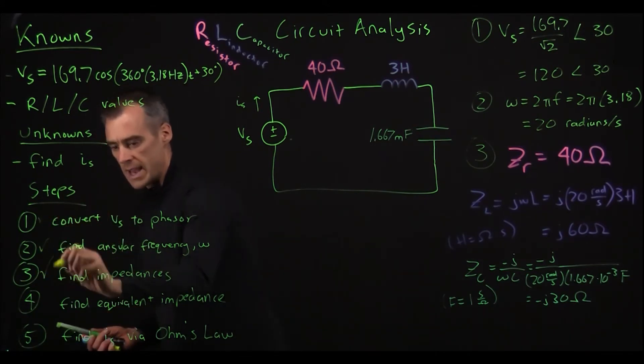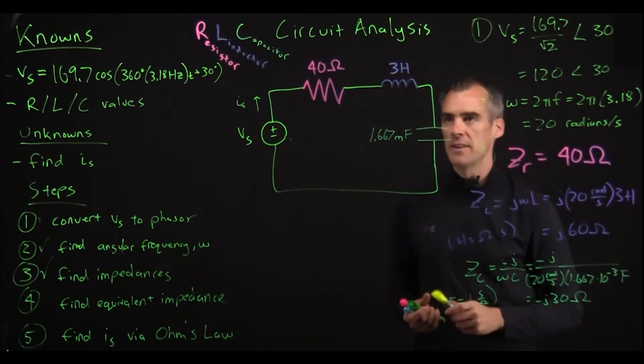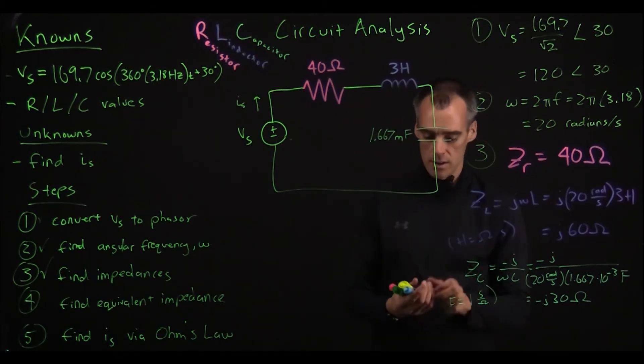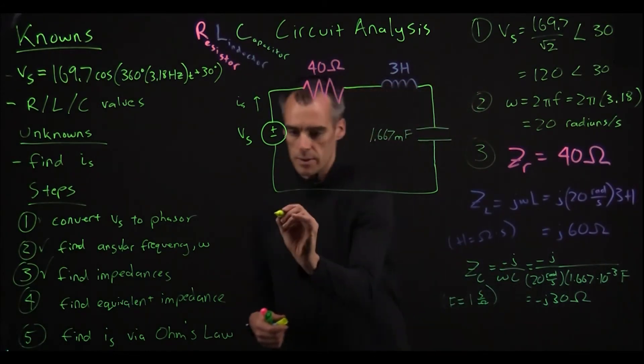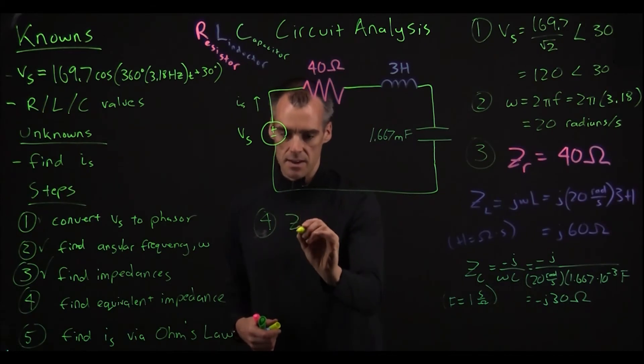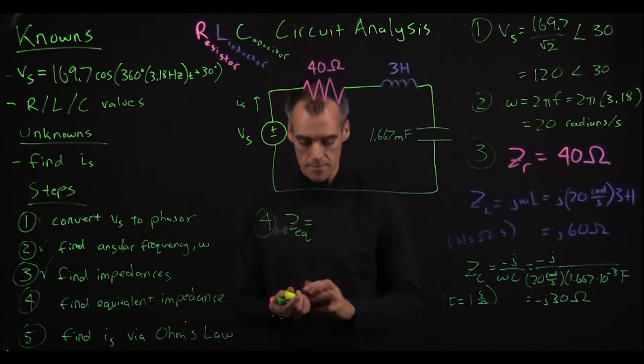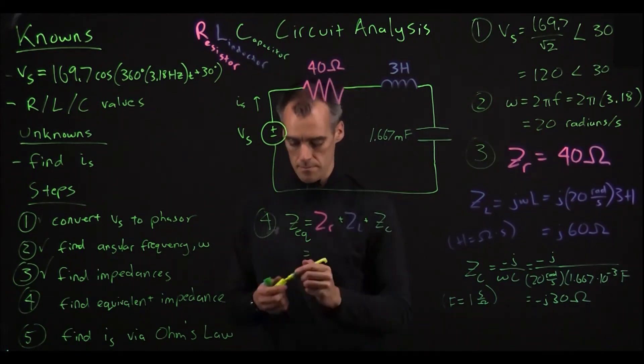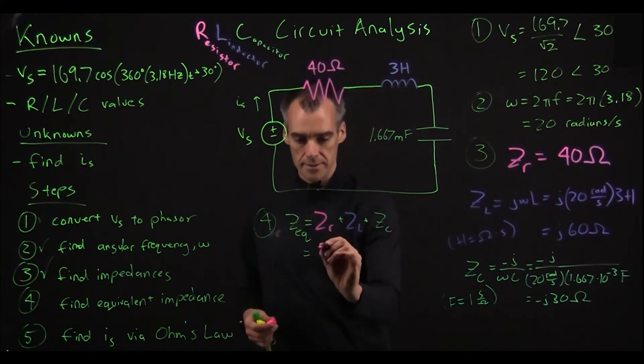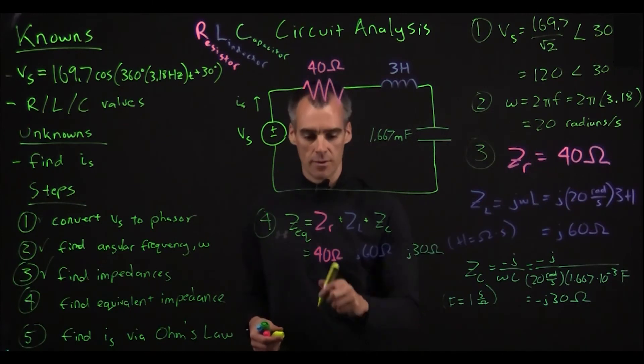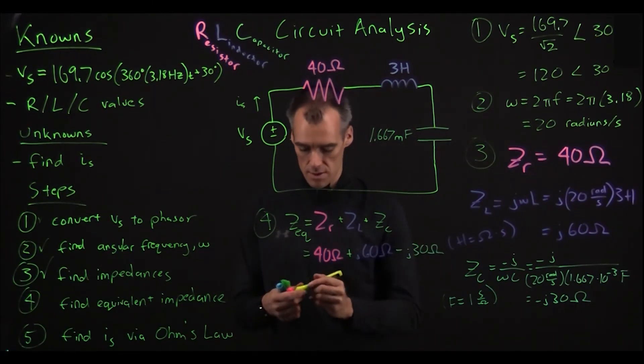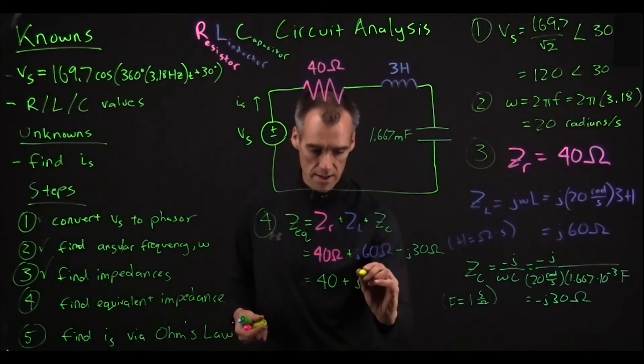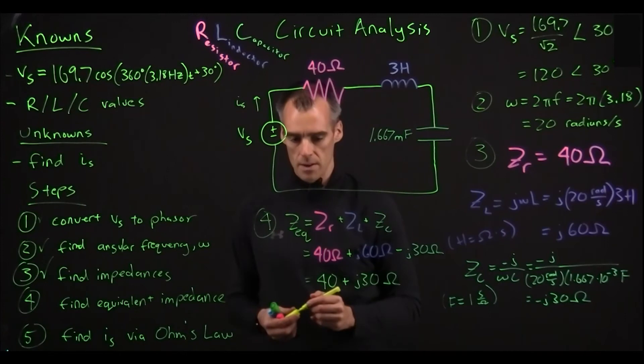Moving on to 4 here. Find the equivalent impedance, and this one's pretty easy, because it's in series, and these impedances just add up like resistors do, since they're all in series, you can just add them all, so that's not too bad. So our equivalent impedance is going to be the addition of all 3 of these, and just translating the values that we found over here, we have 40 ohms plus J 60 ohms minus J 30 ohms, for a grand total of 40 plus J 30 ohms. So that is our equivalent impedance.